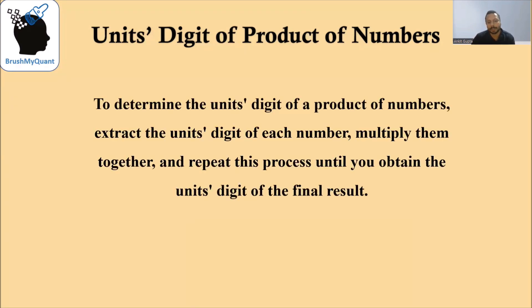To determine the units digit of a product of numbers, we need to extract the units digit of each number, multiply them together, and repeat this process until we obtain the units digit of the final result. Let's understand this by taking an example.